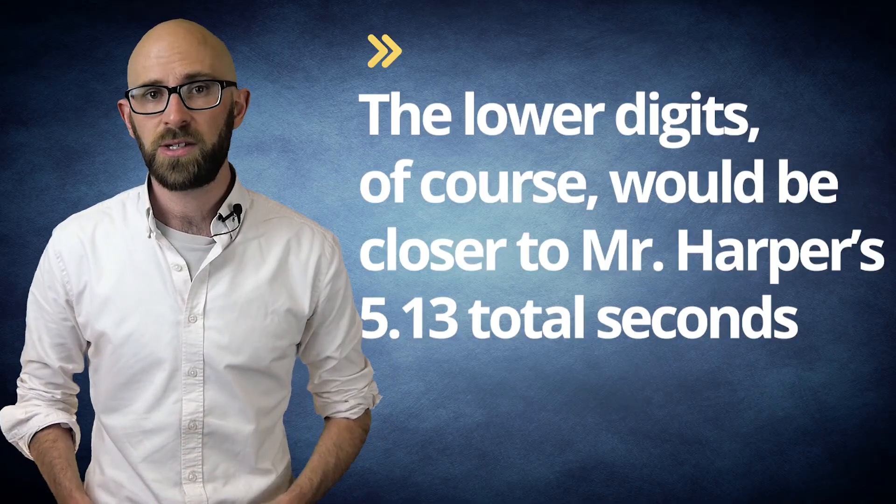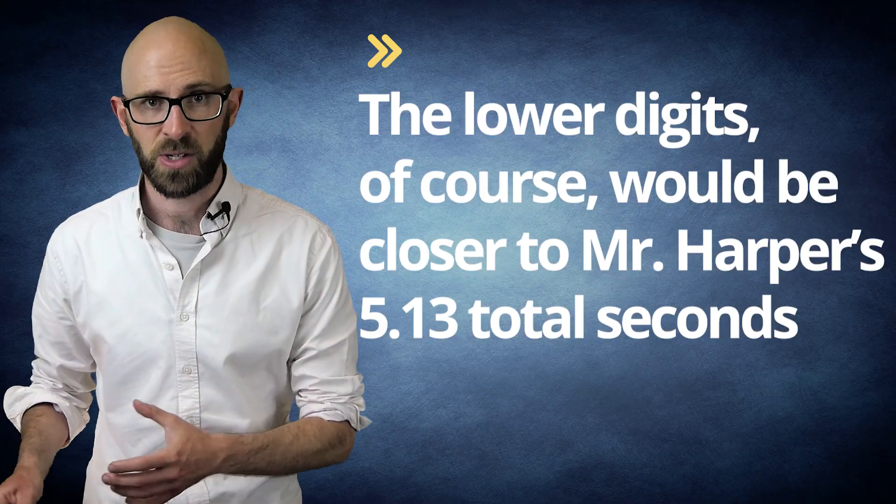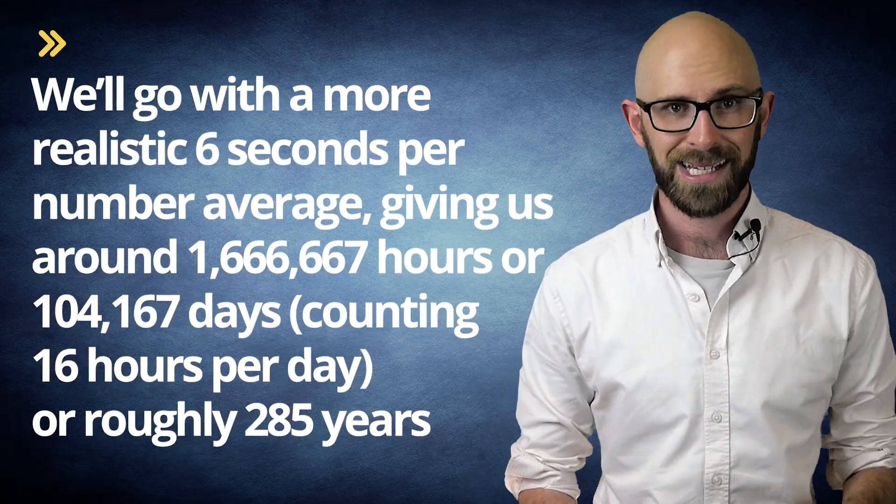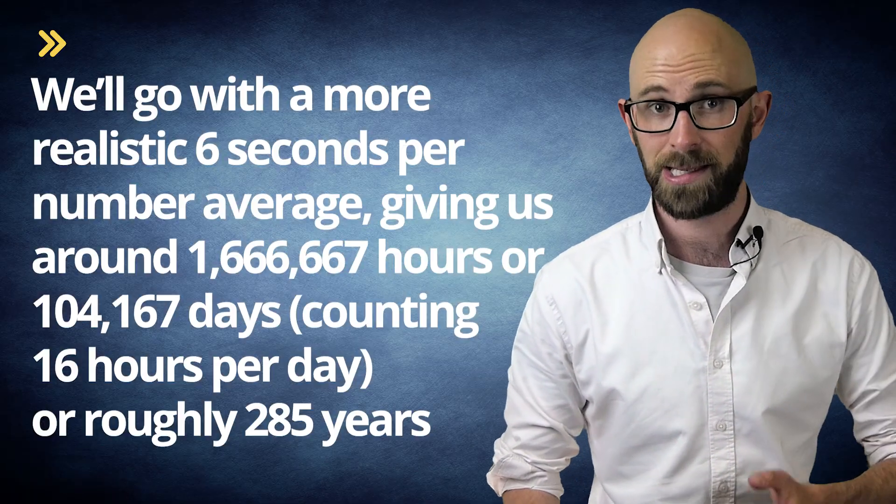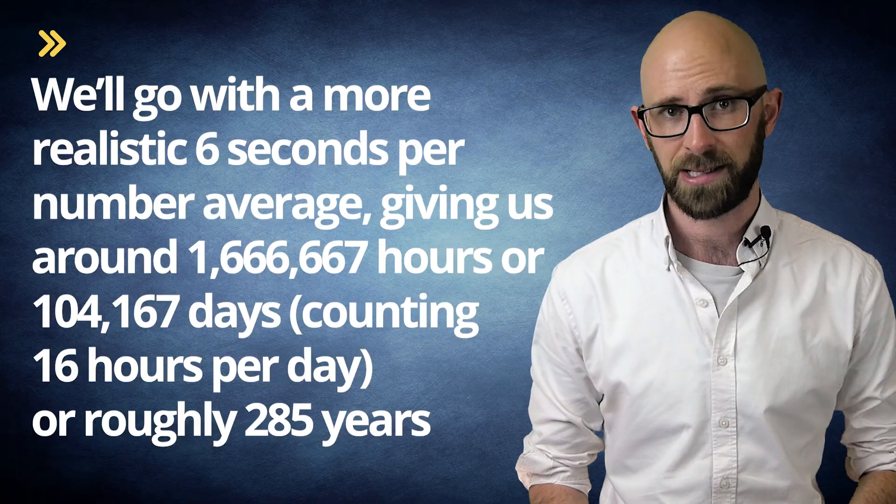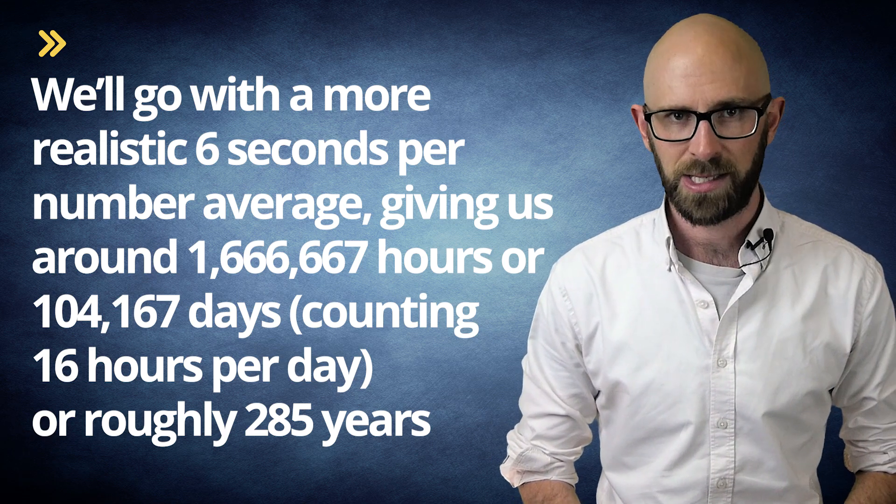The lower digits, of course, would be closer to Mr. Harper's 5.13 total seconds, but as with counting to a million, the upper end would come to dominate pretty quickly. So just for an exceptionally rough ballpark figure, we'll go with a more realistic 6 seconds per number average, giving us around 1,666,667 hours or 104,167 days counting at 16 hours per day or roughly 285 years, assuming one had the benefit to read the numbers off a screen. Without this, we're quite certain, given our little practice runs with counting such large figures, that it would take much, much longer due to the added interim seconds needed for focusing and thinking in order to keep the number in one's head and stave off a mental breakdown as the years go on.